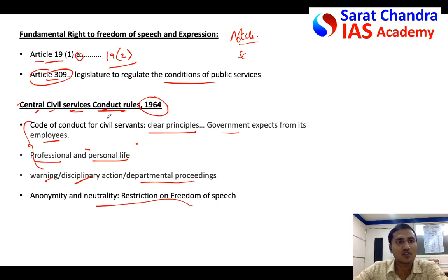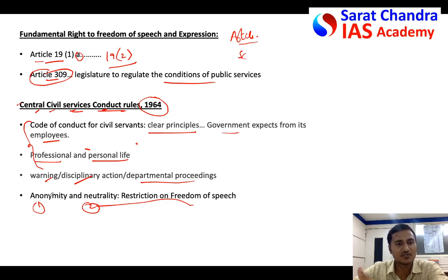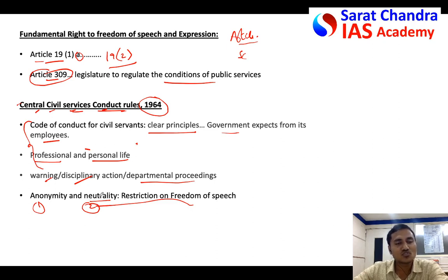The question says that civil service conduct rules are restricting freedom of speech. You say yes, because in the civil service conduct rules it is clearly mentioned that anonymity and neutrality are two important qualities that shall be maintained by civil servants. Anonymity means a civil servant should remain anonymous — not seek recognition for his work, working behind the screens. Neutrality means whichever political party comes into power, it should not matter — he has to work with the same passion and enthusiasm. To achieve these two things, there is definitely a requirement for some restriction on freedom of speech.